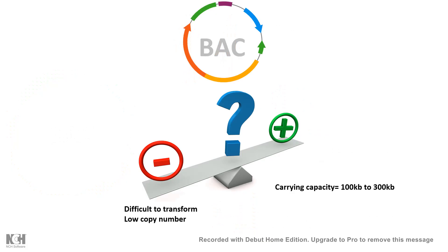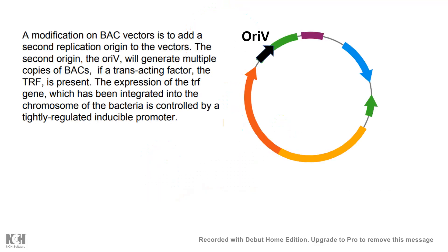BAC does have some problems. While its carrying capacity is a huge advantage, it is difficult to transform and has a low copy number. The difficulty of transformation can be overcome by using electroporation rather than normal transformation. The low copy number can be addressed by adding a second extra origin of replication — the OriV site. This OriV site generates multiple copies of BACs when a trans-acting factor known as TRF (trans-regulatory factor) is present, ensuring the copy number of the bacterial artificial chromosome is maintained.